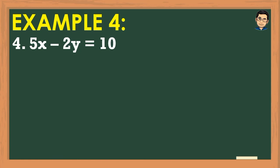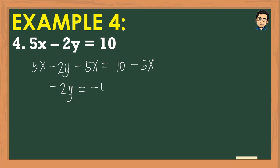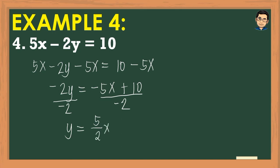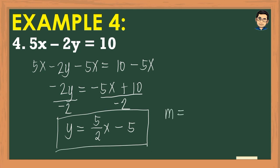For the last example: 5x - 2y = 10. We subtract 5x from both sides, leaving -2y = -5x + 10. We divide both sides by -2: (-2y) ÷ (-2) = y, and (-5x) ÷ (-2) = +5/2 x, and 10 ÷ (-2) = -5. Our final answer is y = (5/2)x - 5. The slope is 5/2 and the y-intercept is -5.